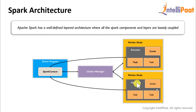Inside the worker nodes we have executors. An executor is a distributed agent responsible for the execution of tasks, and every Spark application has its own executor process. Executors usually run for the entire lifetime of a Spark application. To sum it up: Spark context takes the job, breaks it into tasks, and distributes them to the worker nodes. These tasks work on the partitioned RDDs, perform operations, collect the results and return to the main Spark context. If you increase the number of workers, you can divide jobs into more partitions and execute them in parallel over multiple systems, making it much faster. With more workers, memory size also increases and you can cache jobs to execute them faster.